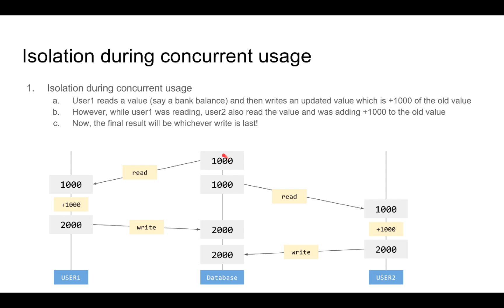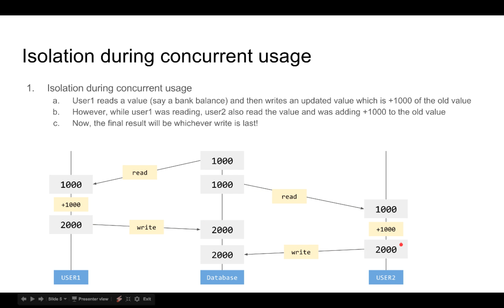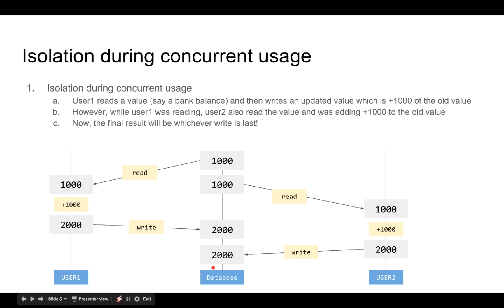User one is reading the value of one thousand, adding a thousand to it, and writing the new value. So the new value of two thousand gets written. But while user one is reading and writing this new value, user two is also trying to add a thousand rupees to this bank balance. User two reads one thousand, adds a thousand, thinks that the new balance is two thousand rupees, and tries to write this new balance. So what is happening is that before the first write came through, the second user already read a value which was actually invalid.